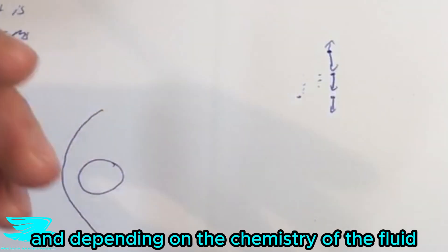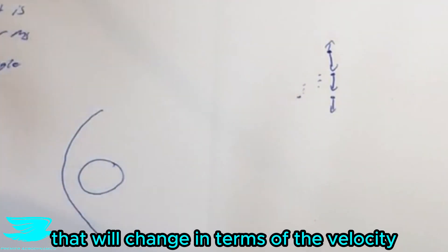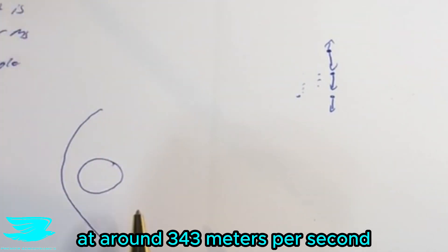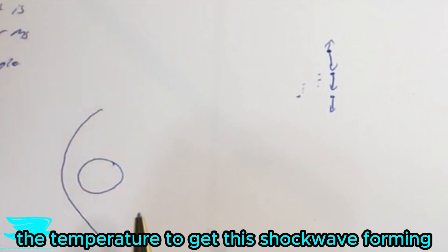Depending on the chemistry of the fluid, that will change in terms of the velocity. For air, you usually need to throw this ball at around 343 meters per second or depending on what the density of the air is and the temperature to get this shock wave forming.